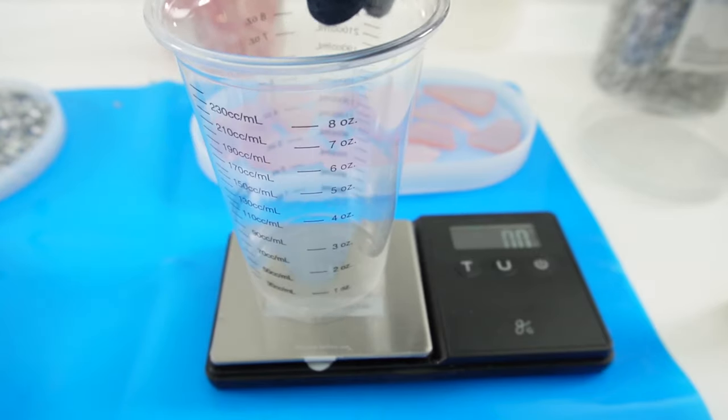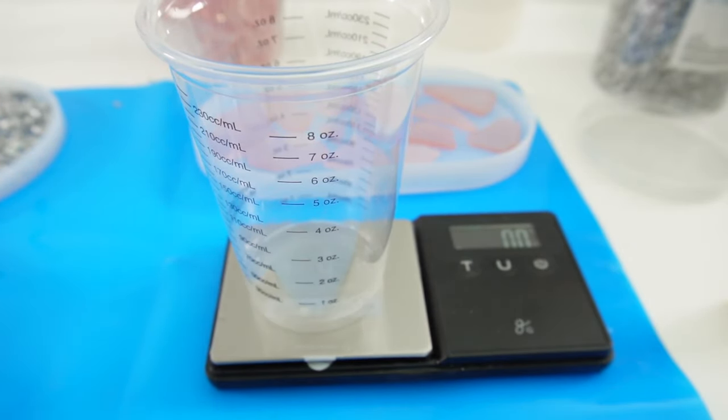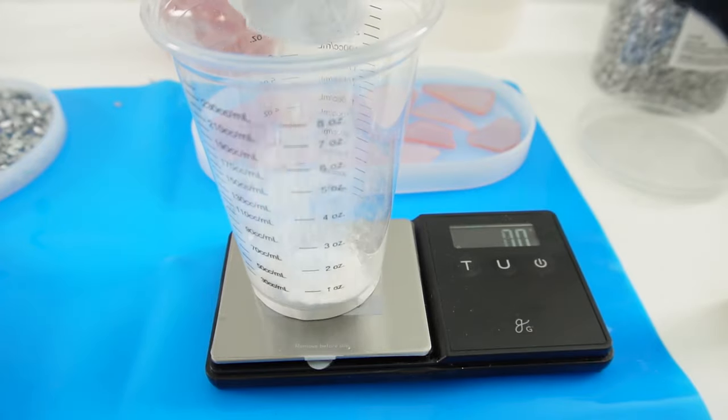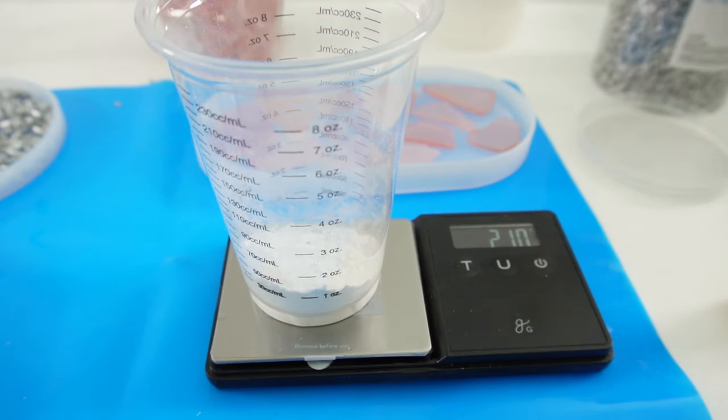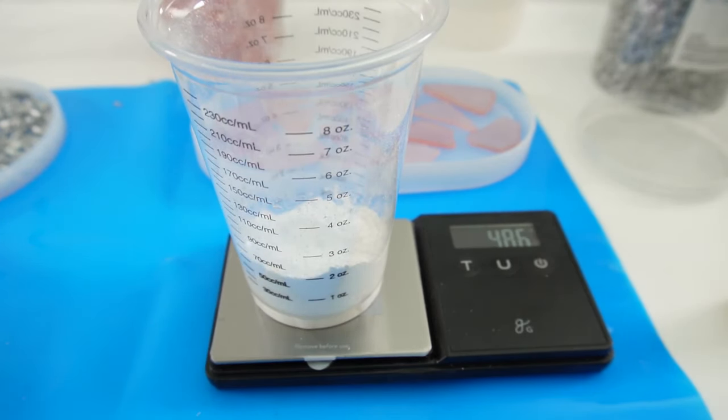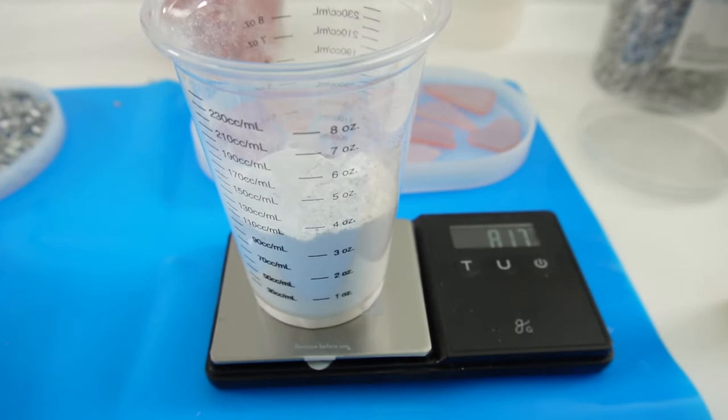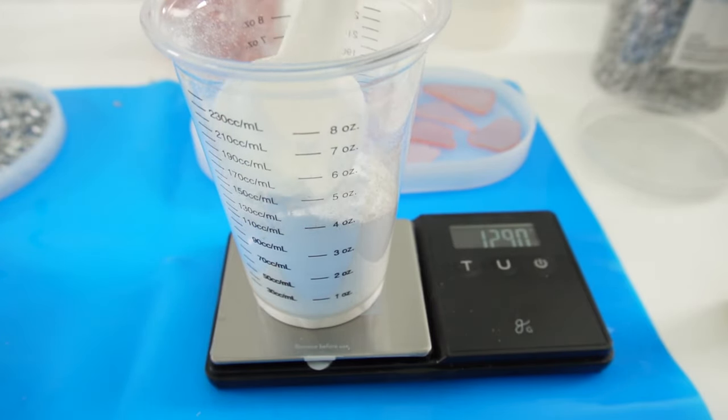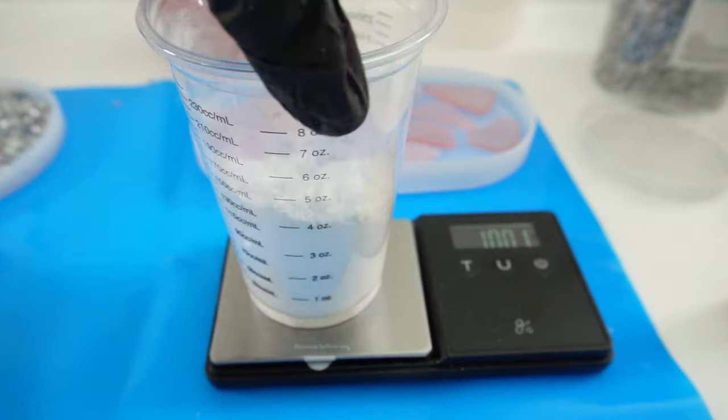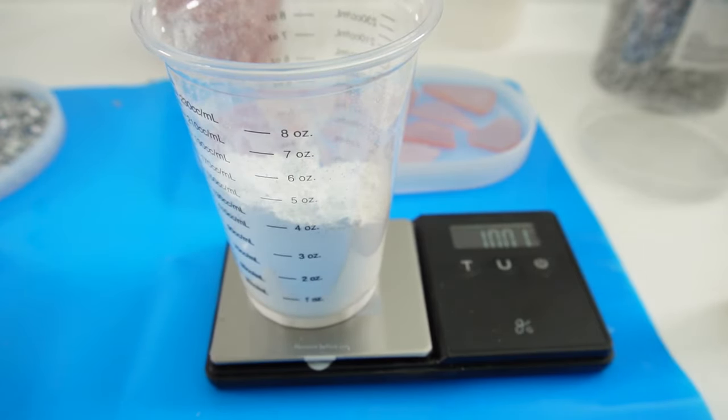Now let's measure the plaster. And this is a 10 to 3 ratio. I'm going to use this scooper. So that's 21, 48, 75, 104. Let's go ahead and take some out. So we have 100 grams of the plaster. Let's go ahead and add the water.